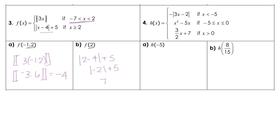Moving on to number 4, we are going to sub in negative 5. It looks like at this boundary there's the 'or equal to', so we plug in there. We have negative 5 all squared minus 5 times negative 5 — so positive 25 minus a negative 25. Remember, minus a negative is plus a positive, and that gives us 50.